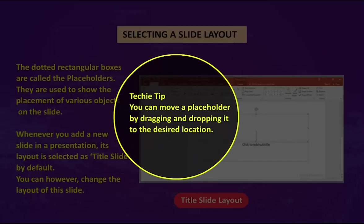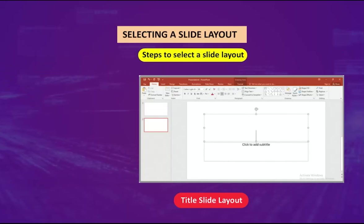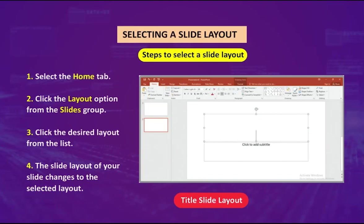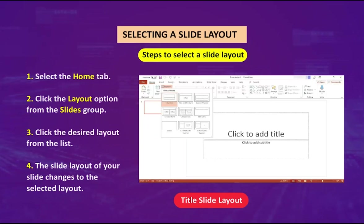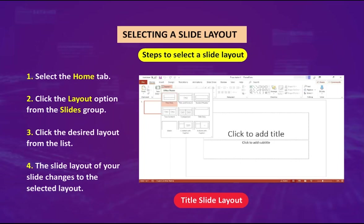Techie tip: You can move a placeholder by dragging and dropping it to the desired location. Steps to select a slide layout: one, select the Home tab; two, click the Layout option from the Slides group; three, click the desired layout from the list. The slide layout of your slide changes to the selected layout.